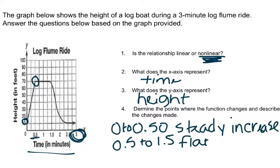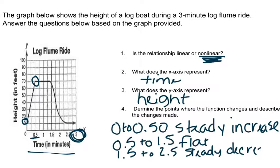From 1.5 minutes to about 2.5 minutes, there's a steady decrease. All we had to do was look at the graph to get that information. If I was going to describe this relationship in words: the graph shows a non-linear function. It's increasing when the log ride is being pulled up to the top. The height is constant when the log is going across and getting ready to drop. And it is a decreasing relationship as the log boat goes down the water chute and into the water.